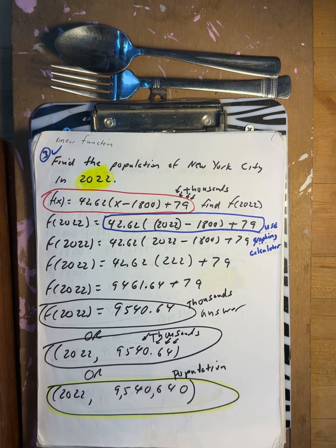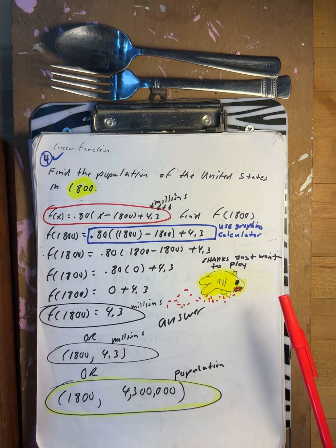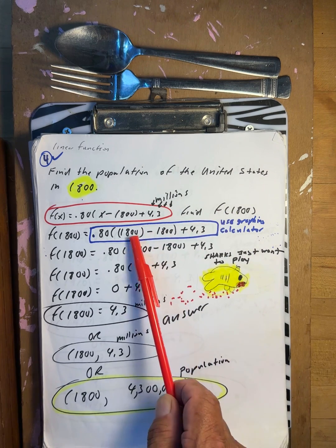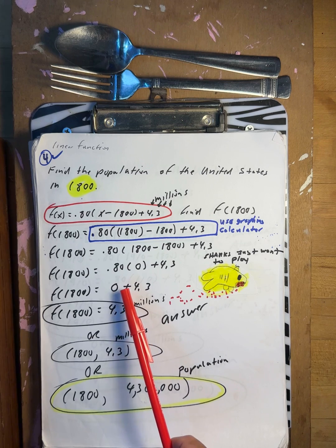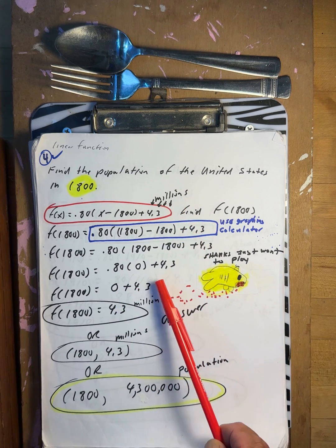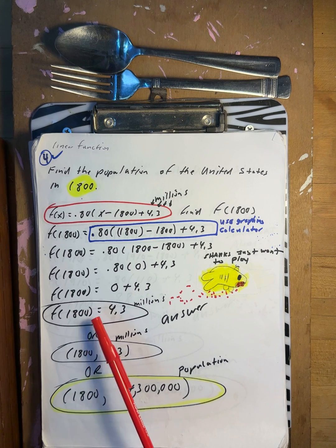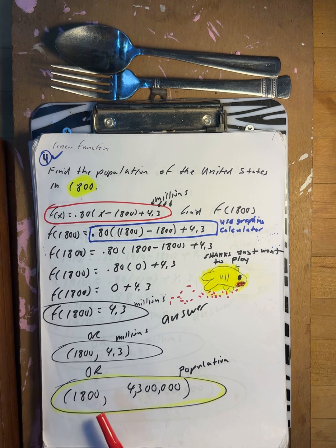Find the population of the United States in 1800. Here's a linear function. f of 1800: 1800 minus 1800 is 0, 0 times the coefficient is 0, plus 4.3. This is in millions. So f of 1800 is 4.3 million.